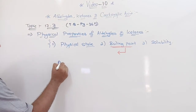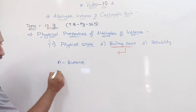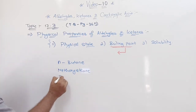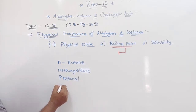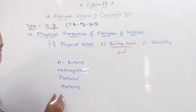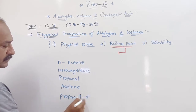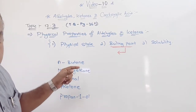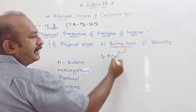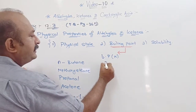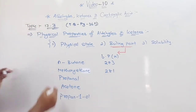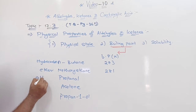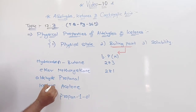In the table, n-butane is the hydrocarbon, methoxyethane is the ether, propanal is the aldehyde, acetone is the ketone, and propan-1-ol is the alcohol. The boiling points are given in Kelvin: n-butane is 273K, methoxyethane is 281K, propanal is 322K, acetone is 329K, and propan-1-ol is 370K.